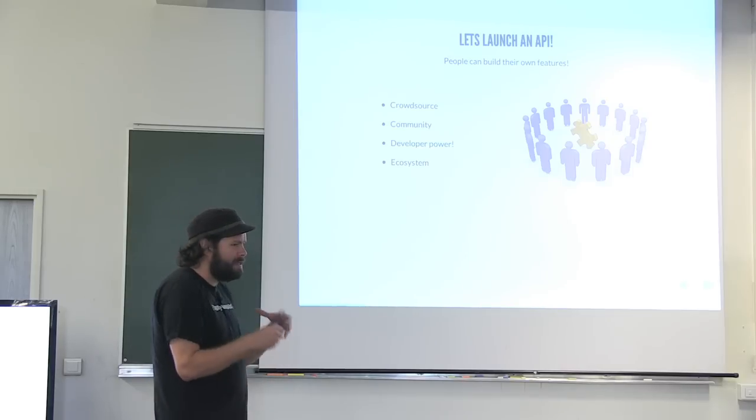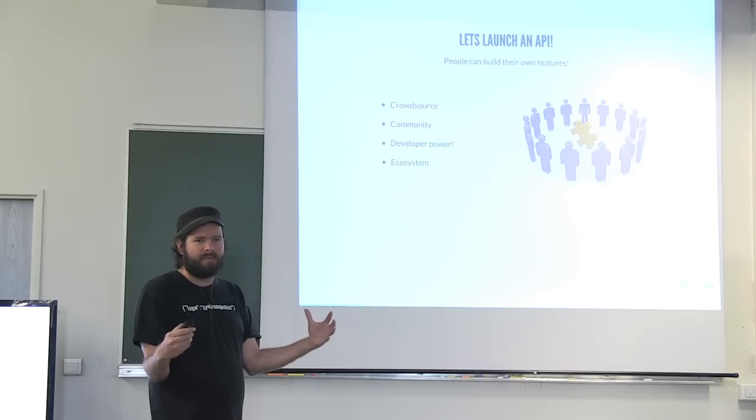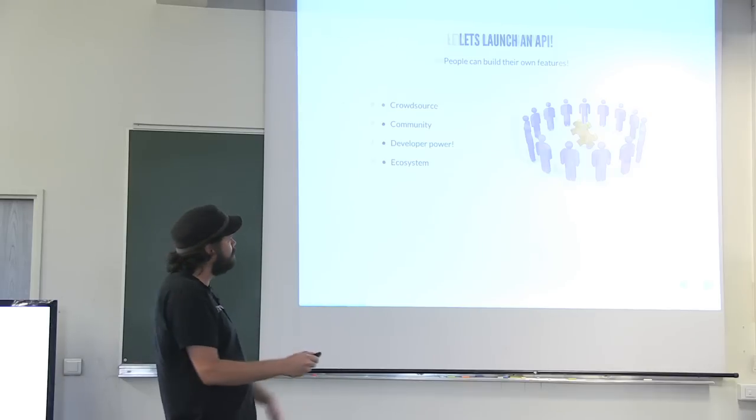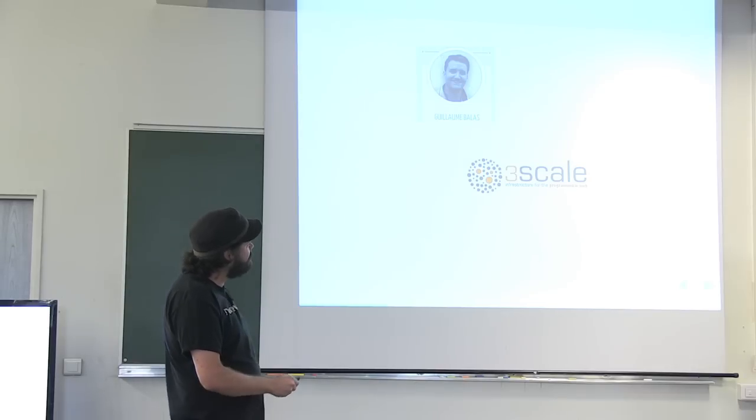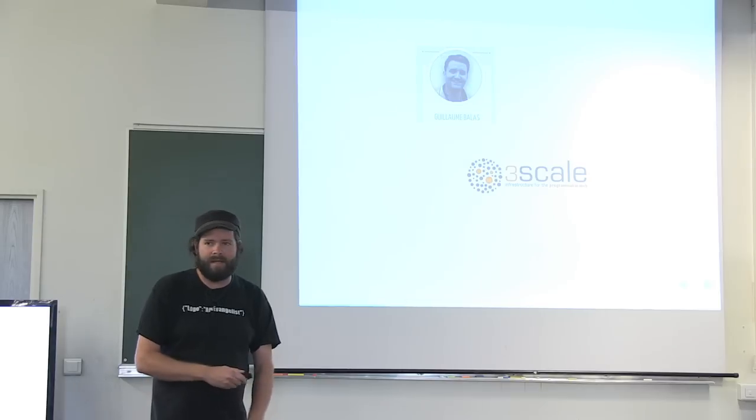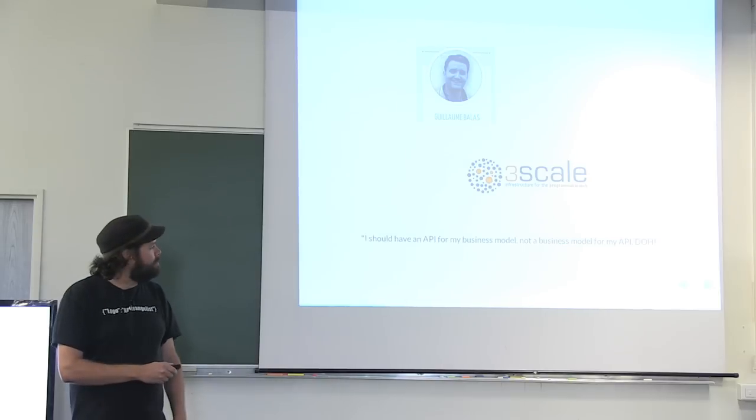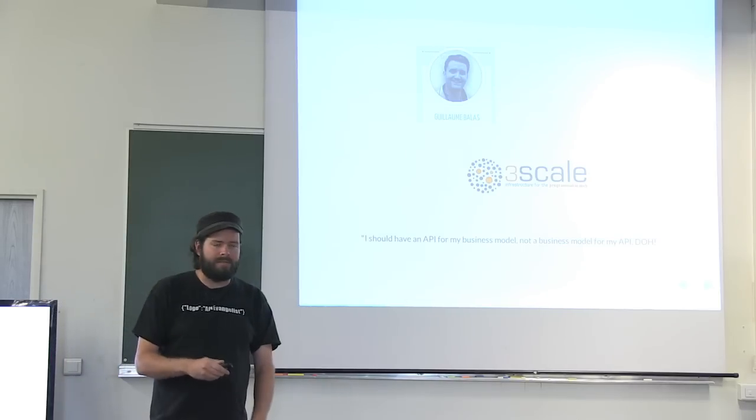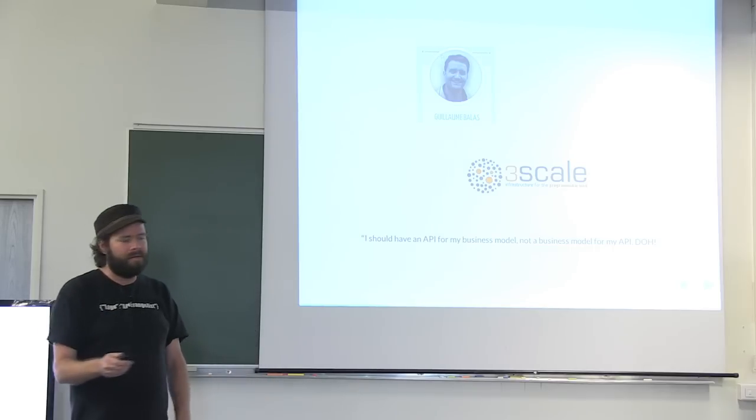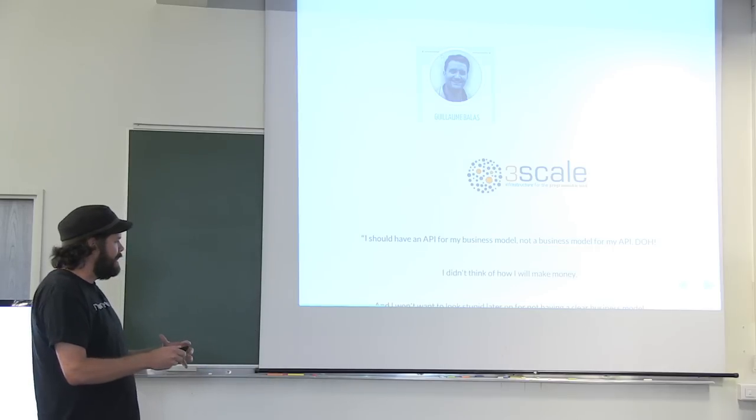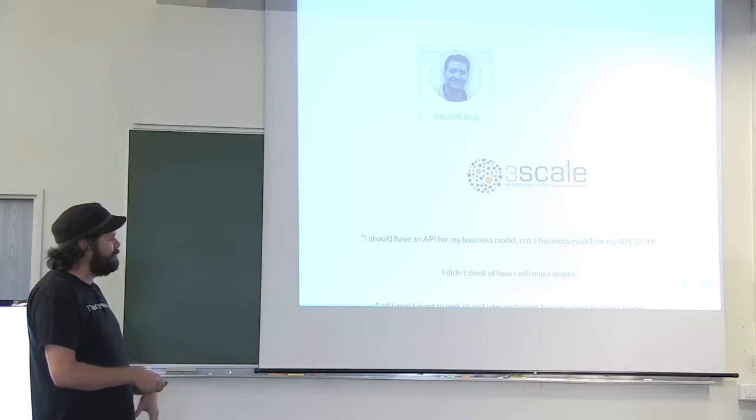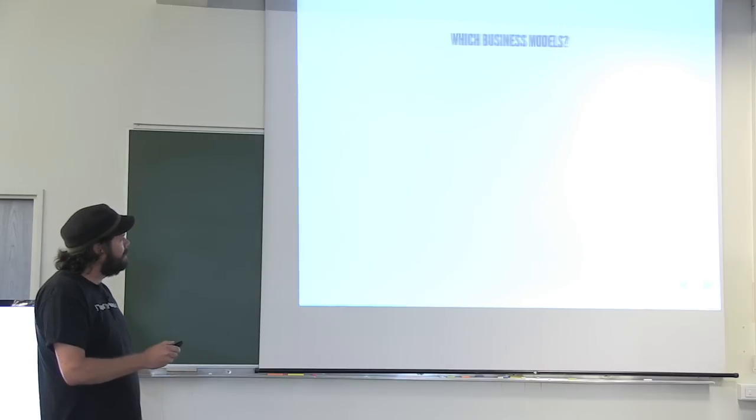I'm going to hopefully evolve it into a large ecosystem of thousands, even hundreds of thousands of developers. But I remember Guillaume saying yesterday from 3Scale that I should have an API for my business model, not a business model for my API. I want to make money doing this and I don't want to look stupid. So which business model works for my startup?